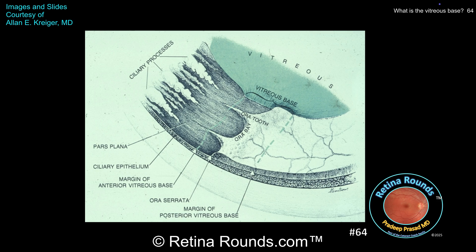The collagen fibers of the vitreous are integrated with the underlying retina and ciliary epithelium and cannot be detached from these underlying structures at the vitreous base. During a vitrectomy, an induced PVD extends to the posterior margin of the vitreous base. While the vitreous can be removed posterior to the vitreous base, the vitreous overlying the vitreous base cannot be removed and must be trimmed or shaved with a vitreous cutter.